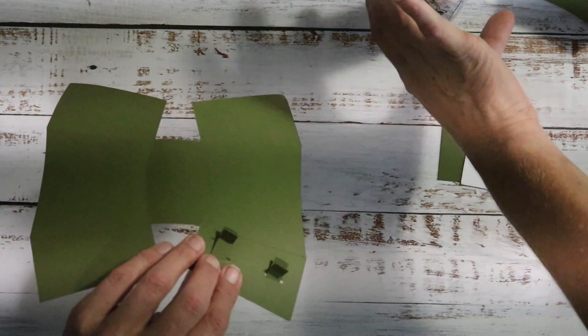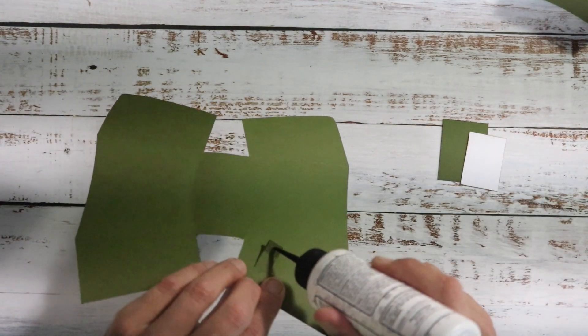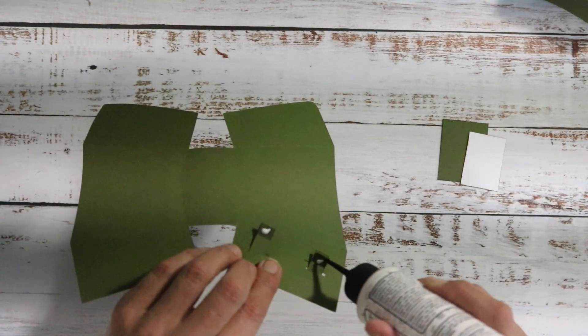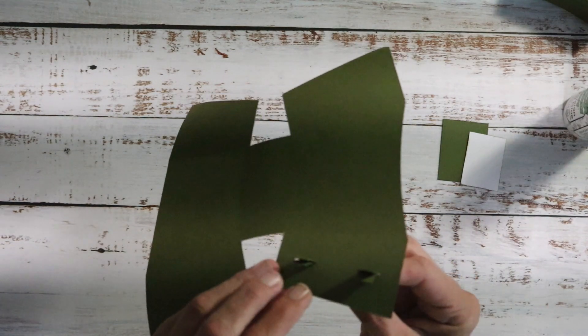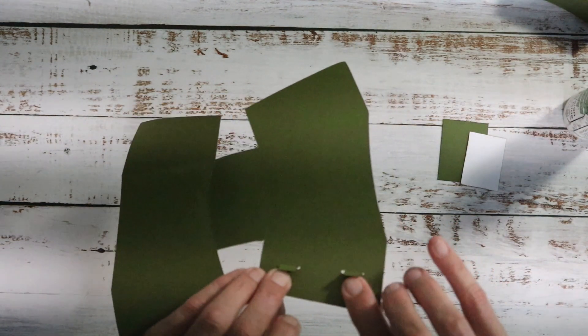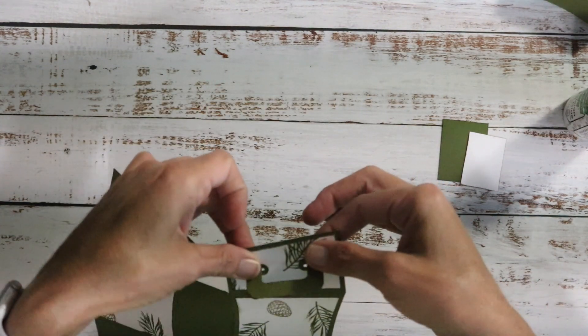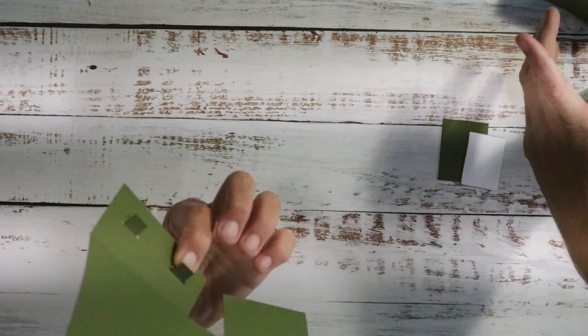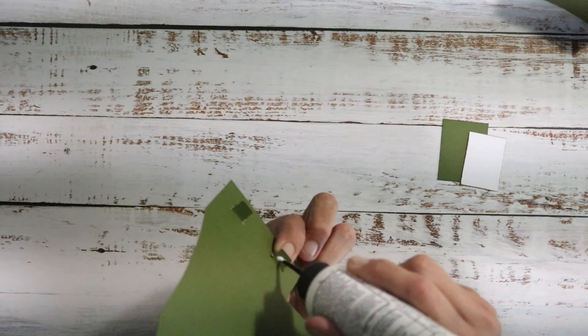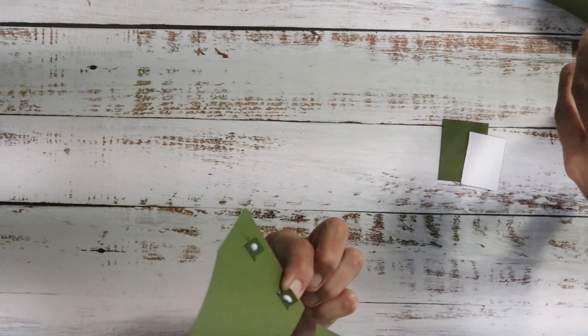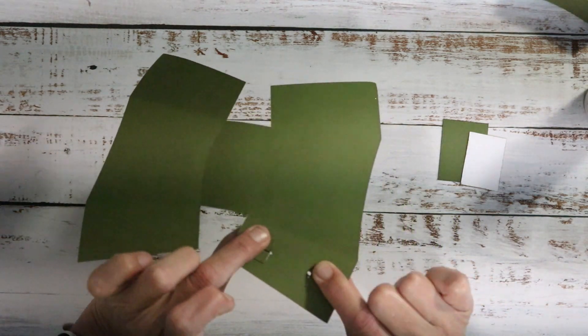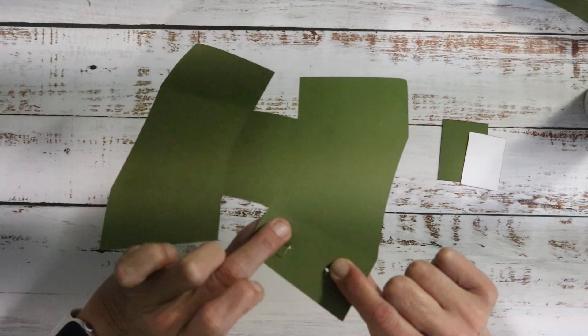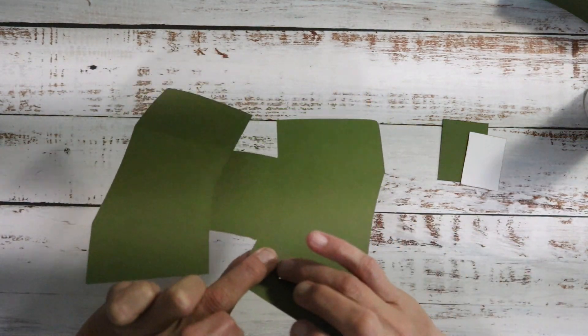A little dot of glue on that little tab right there and right there. Then bring it through and just kind of hold it in place. Then I'll do the other side. You can also use a sticky strip or a stronger glue here if you want to. Give that a second to set up and then we'll assemble the box.